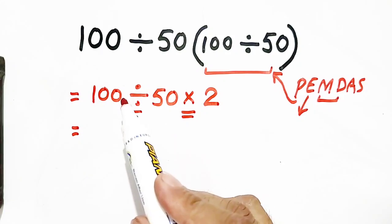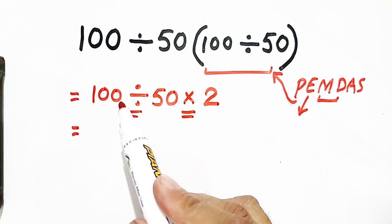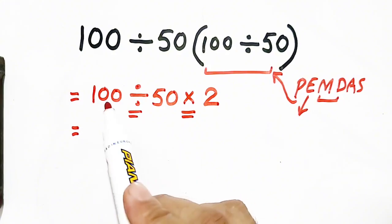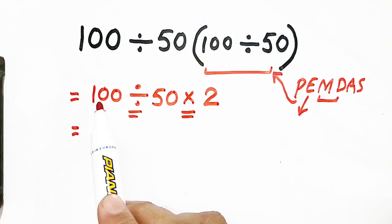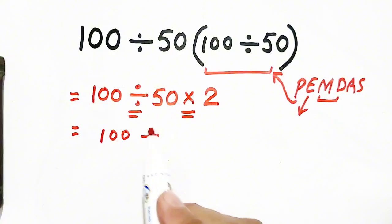As division is at left, so first of all, we will solve 100 divided by 50. If we solve 100 divided by 50 times 2, which will be 100, and 100 divided by 100 is equal to 1, but it is wrong.